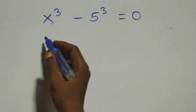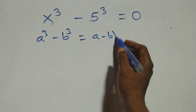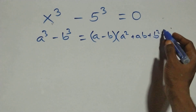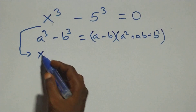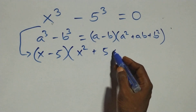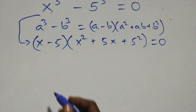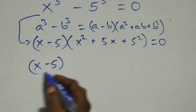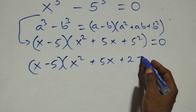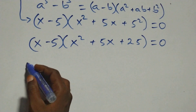For the second case, we apply a cubed minus b cubed equals a minus b into bracket a squared plus ab plus b squared. All we have becomes x minus 5 into bracket x squared plus 5x plus 5 squared equals to zero, which is x minus 5 into bracket x squared plus 5x plus 25, equals to 0.